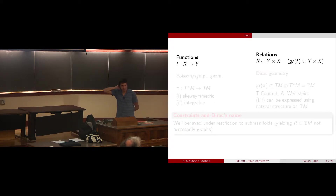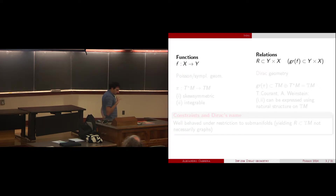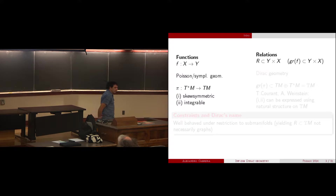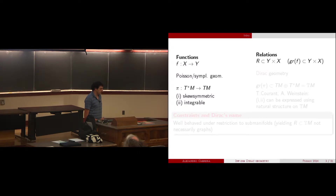If you're not familiar with the objects I'll be working with, you might get a bit lost. But I want you to have this principle in mind: the idea is based on a shift of perspective, similar to the shift of perspective between functions and relations. Poisson symplectic geometry can be described in terms of a particular function that takes a covector to a vector, satisfying two properties: skew symmetry and integrability, the Jacobi identity.